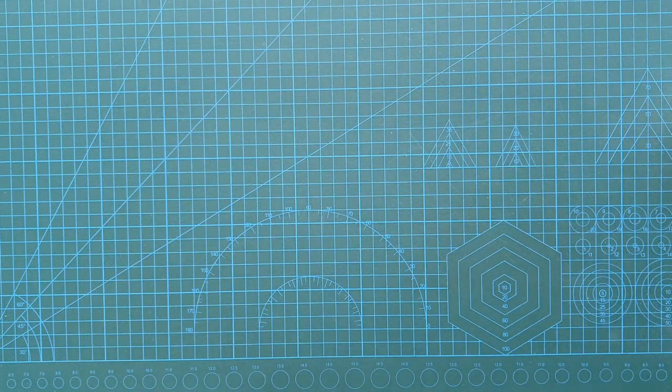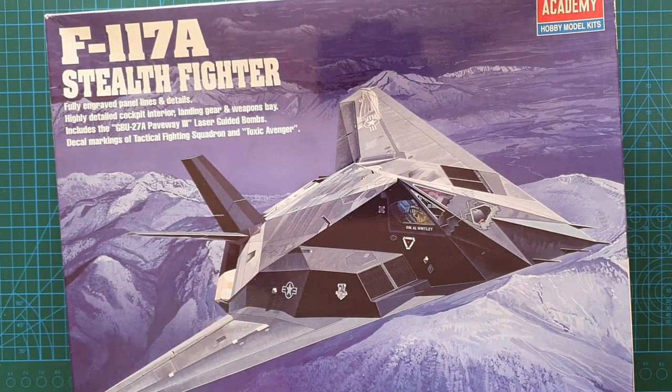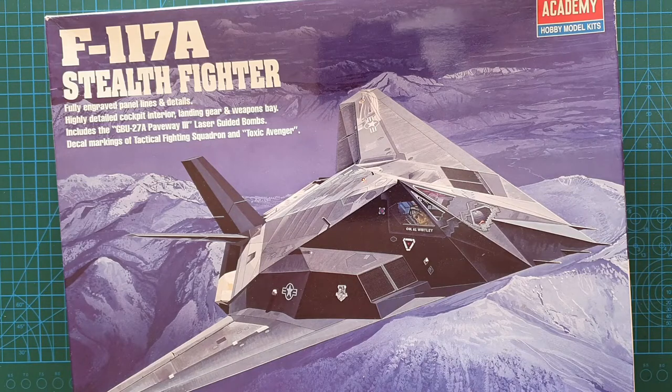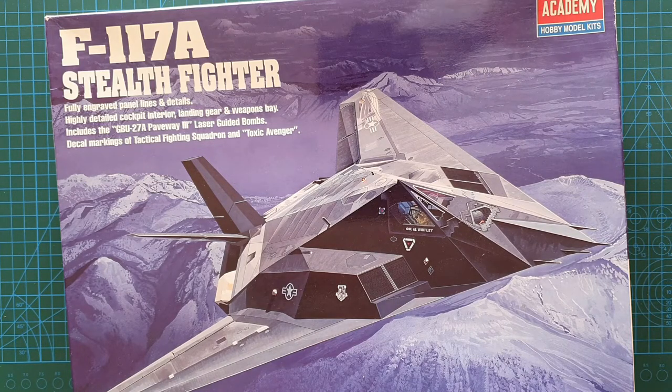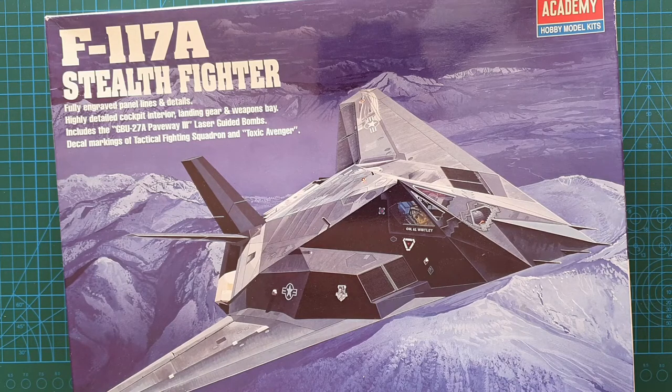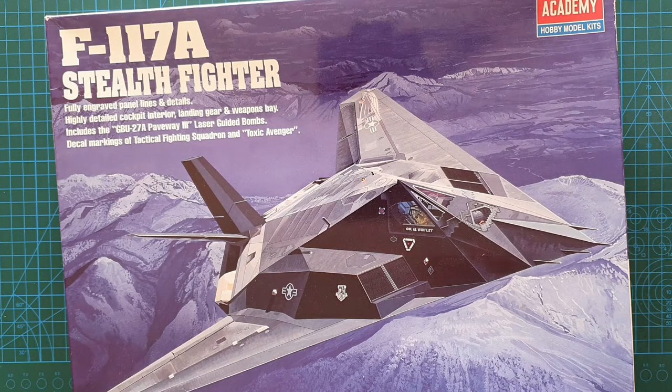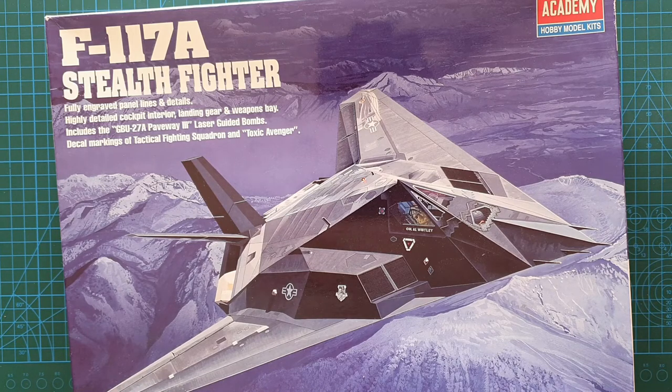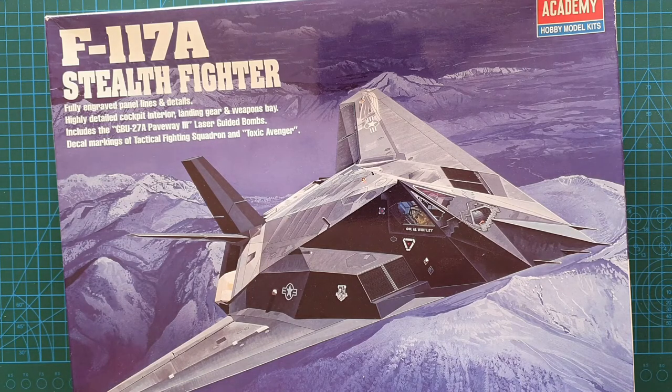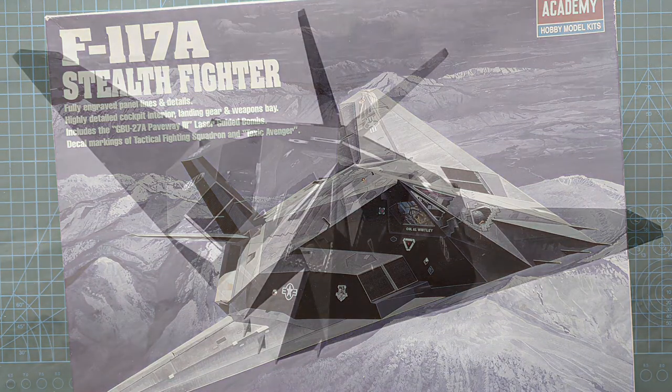That is Academy's F-117A Stealth Fighter, 1/48 scale, kit number is 2118, came out in 1999. Fairly straightforward, easy build from what I can see. It's quite a large aircraft, will take up a bit of space on your display shelf but quite impressive as well. And I'm really happy with the price that I paid for this one. So that brings us to the end of this one. Hope you've got something from it. Thank you for your subscriptions, your likes, and your comments, they're always appreciated. And as usual guys, until next time, take it easy and I'll see you later.